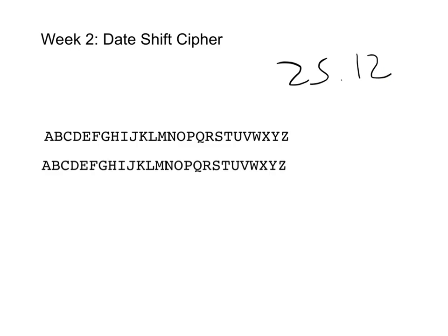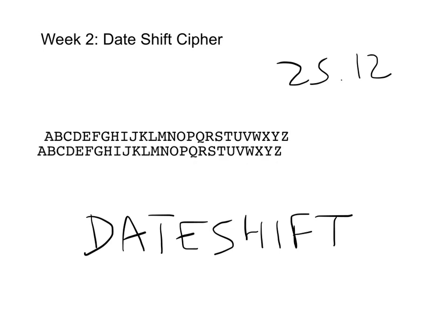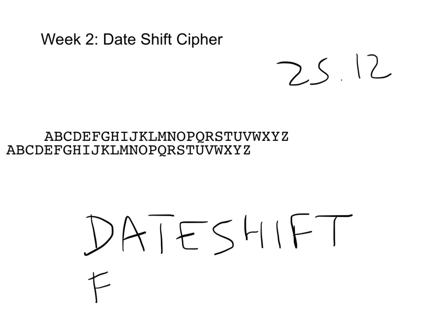The first letter D I'm going to move by two, so I line up here — A becomes C, and so D becomes F. The next letter I'm going to move by five, so I shift this across so that A lines up with F, meaning A is F.